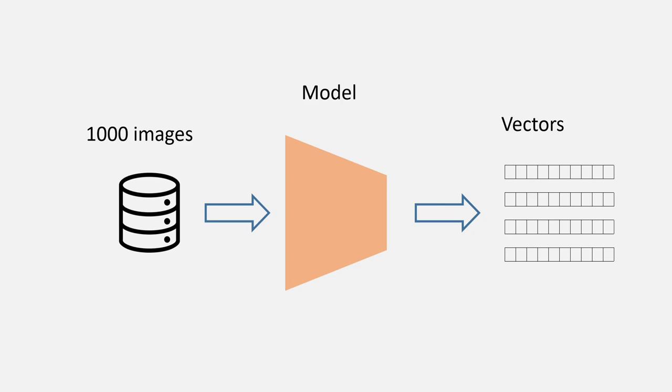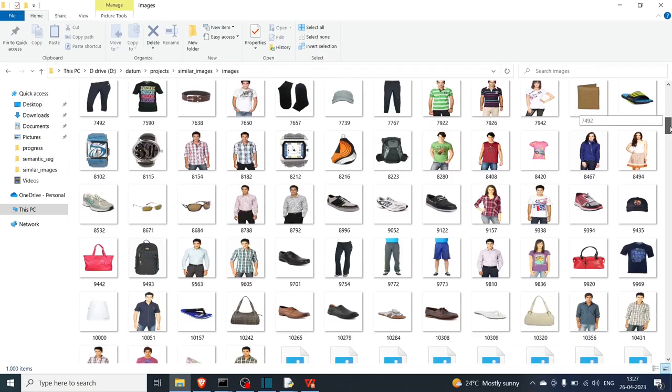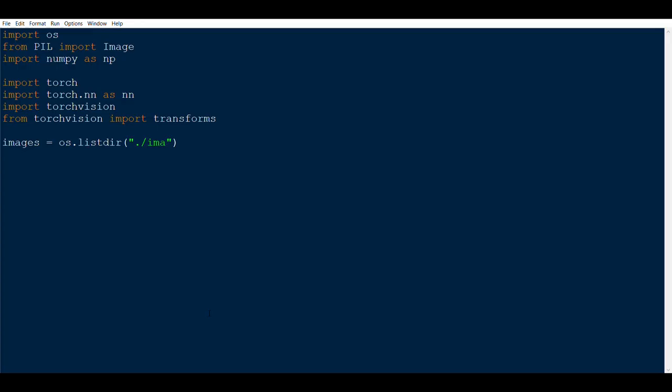For the images, as you can see, we have a database of all the images — there are almost 1000 images. So we will say images equals os.listdir of the images folder to read all the images.